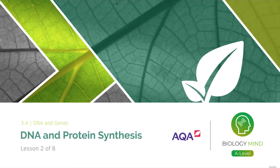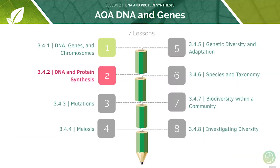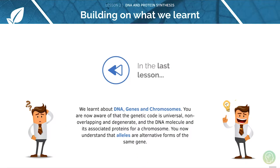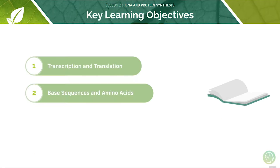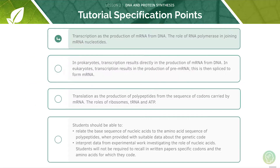Welcome to lesson two of eight in this tutorial covering DNA and protein synthesis. This is the second lesson in our series of eight videos covering the topic of DNA and genes. In the last lesson we looked at DNA, genes and chromosomes. Here are the key learning objectives for today's lesson: first we'll be looking at transcription and translation, then at base sequences and amino acids. Here are the AQA learning objectives for this tutorial — feel free to pause and read through them before we begin.